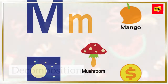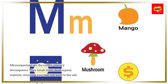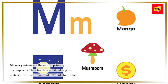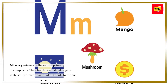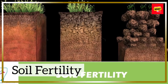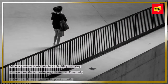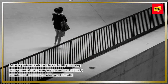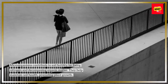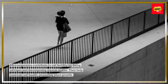Decomposition. Microorganisms are the Earth's primary decomposers. They break down dead organic material, returning essential nutrients to the soil. Soil Fertility: microorganisms contribute to soil fertility by fixing nitrogen and decomposing organic matter. They help maintain soil health, promoting plant growth.